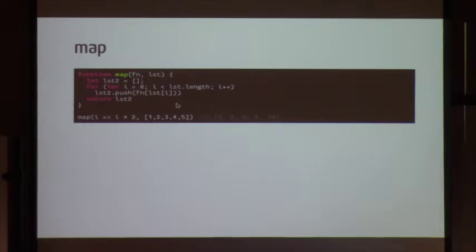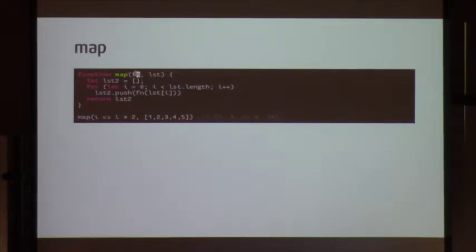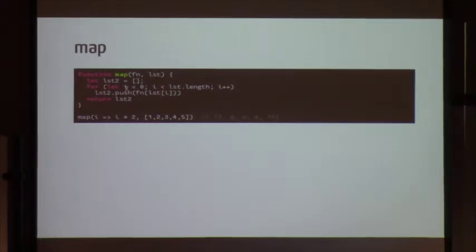Map is another ubiquitous function. If you're doing ES5 work, you can use map to go over arrays or objects and produce new values. For instance, calling map with a function that doubles a number and passing an array returns a new array with all numbers doubled. You take a function and a list, apply the function to each element, and return a new list. It's very simple and very useful.